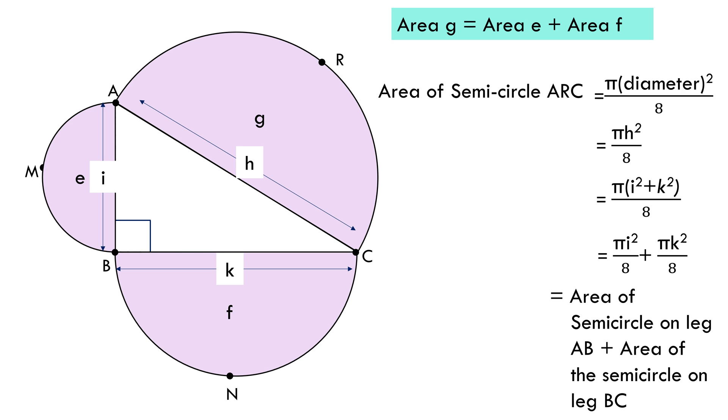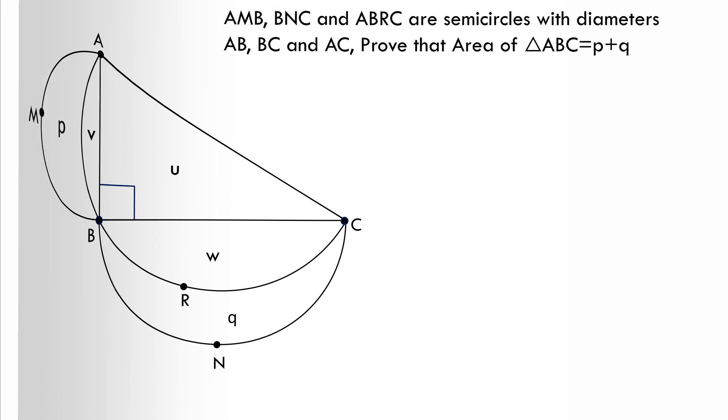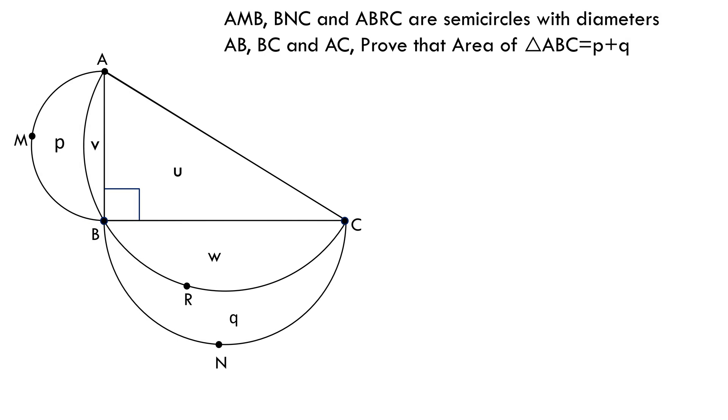Anyways, once we have proved this, let's get back to our original question. Let's assume the area of these shaded portions to be as shown in the figure: p, q, v, w, u. Now because ABRC is a semicircle on hypotenuse of the right-angle triangle, it will be equal to the area of semicircle AMB plus semicircle BNC.